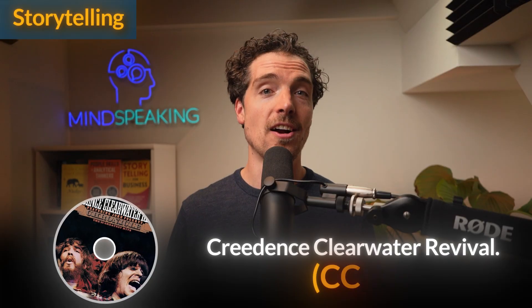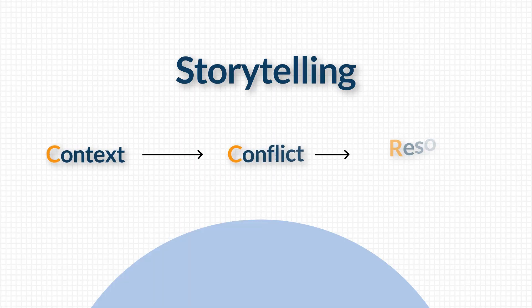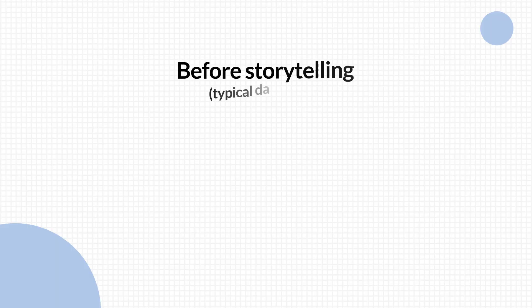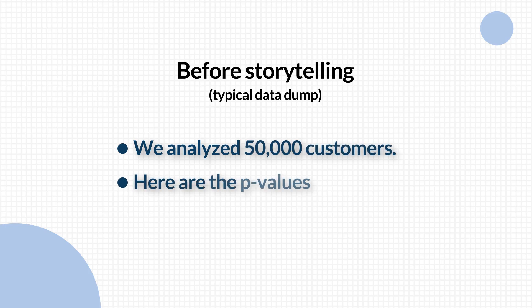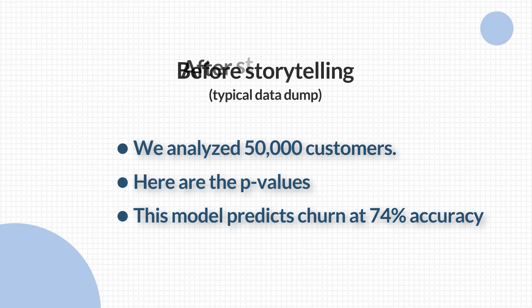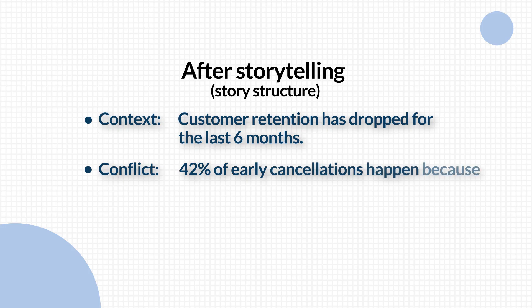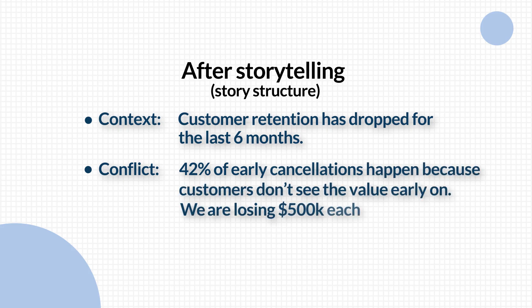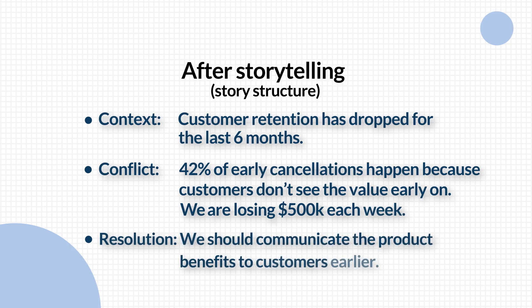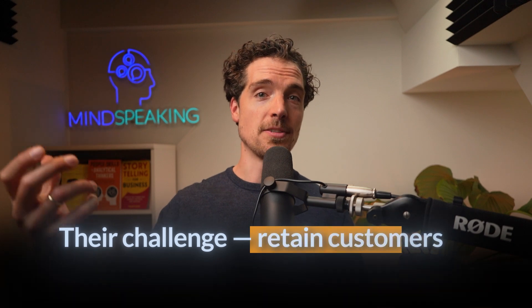I'm 36 years old and people call me grandpa because my music taste is stuck in the 70s — or 60s even. One band I love is Creedence Clearwater Revival, CCR. So here's the CCR framework for storytelling: Context, Conflict, Resolution. Let's look at a before-and-after makeover. The before is the typical data dump: 'We analyzed 50,000 customers. Here are the p-values. The model predicts churn at 74% accuracy.' Stakeholders are lost. Now the after — a compelling story for the marketing audience: Customer retention has dropped for the last 6 months. 42% of early cancellations happen because customers don't see the value early on. We're losing $500K each week. My recommendation is to communicate the product benefits and value to customers earlier, because that's key to increasing loyalty and revenue. Do you see how this story speaks to what the audience cares about — their challenge of retaining customers, and their goal of growing revenue?